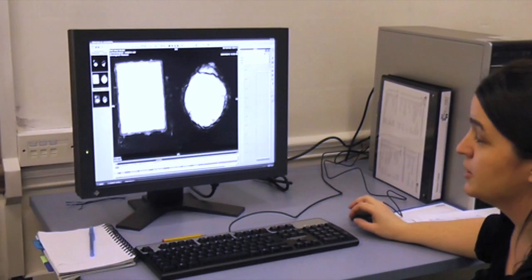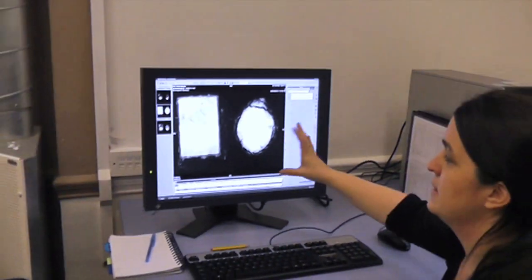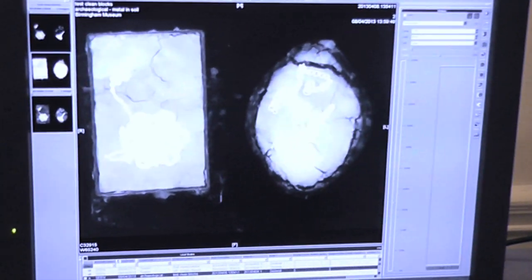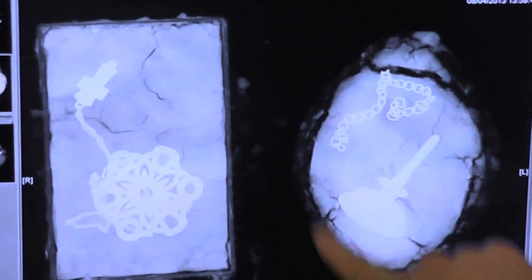So this is the X-ray we've just produced. As you can see, we can clearly see the metal objects inside the soil blocks, and we can see some detail about the containers that they've been lifted in.